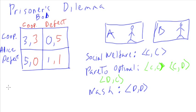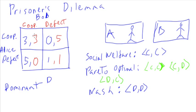This game also has dominant strategies. Looking at Alice: she can get five or one by defecting versus three or zero by cooperating. Five is bigger than three, and one is bigger than zero, so Alice's dominant strategy is clearly to defect. The same for Bob: he can get five or one by defecting versus three or zero by cooperating, so Bob is also going to defect. DD is a dominant strategy for both of them, which also makes it the Nash equilibrium.